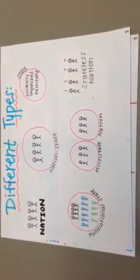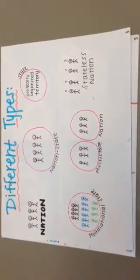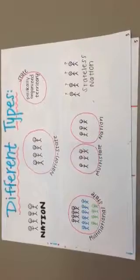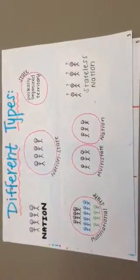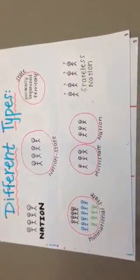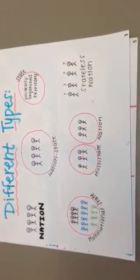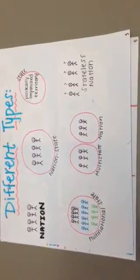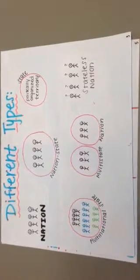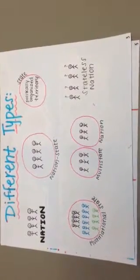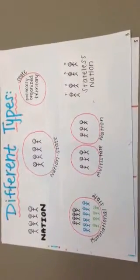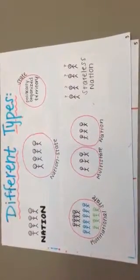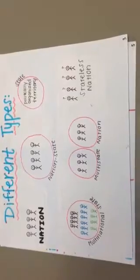A multinational state is a state that has multiple different nations within it. A multi-state nation is a single nation that crosses multiple borders. And a stateless nation is a nation without its own state.